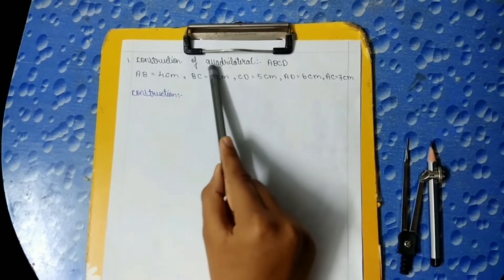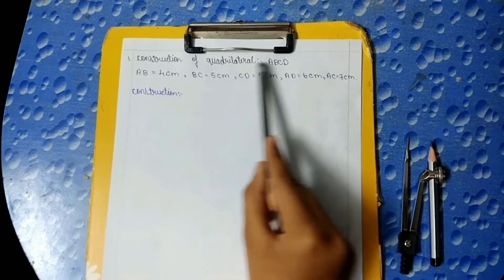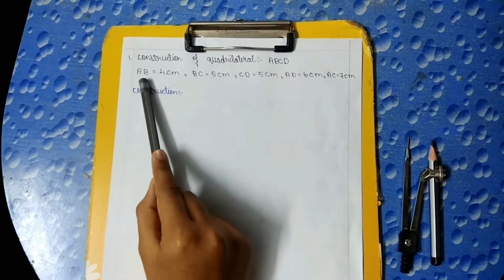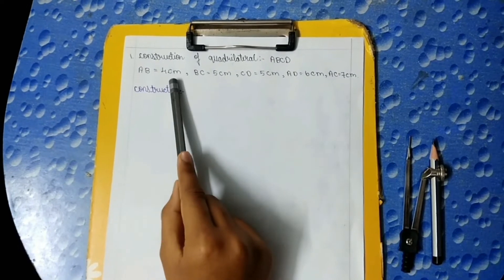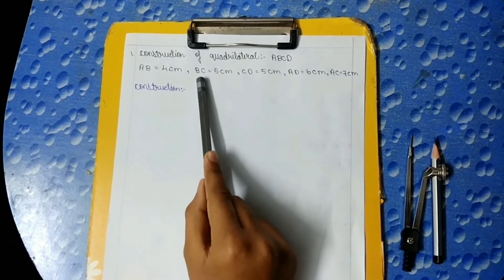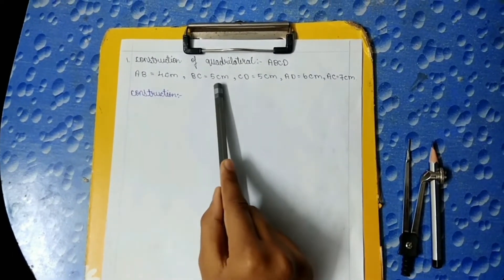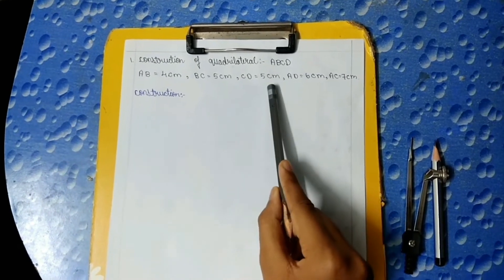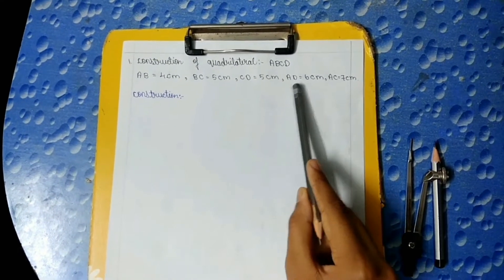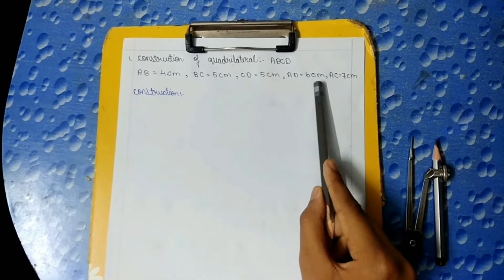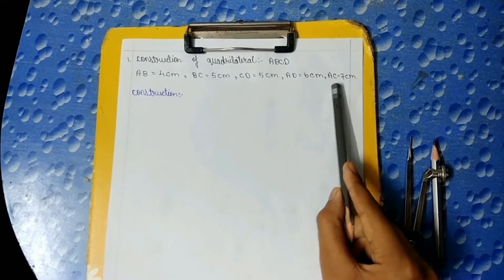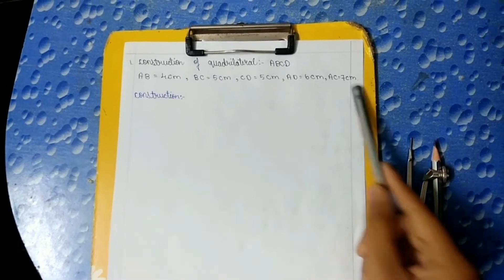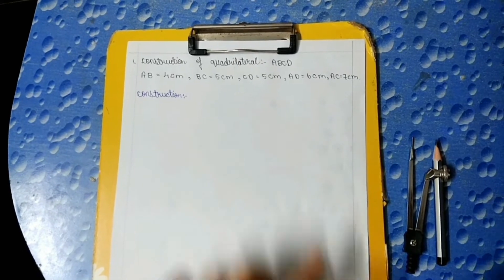Construction of quadrilateral ABCD. AB is equal to 4 cm, BC is equal to 5 cm, CD is equal to 5 cm, AD is equal to 6 cm, and AC is equal to 7 cm. Now let's construct the quadrilateral.